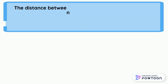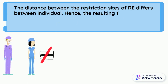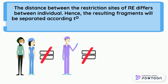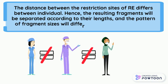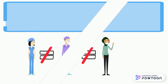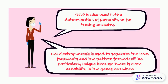The distance between the restriction sites of RE differs between individuals. Hence, the resulting fragments will be separated according to their lengths, and the pattern of fragment sizes will differ for each individual tested. RFLP is also used in the determination of paternity or for tracing ancestry. Gel electrophoresis is used to separate the DNA fragments, and the pattern formed will be particularly unique because there is more variability in the genes examined.